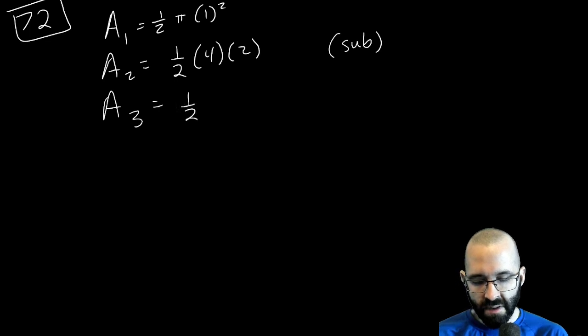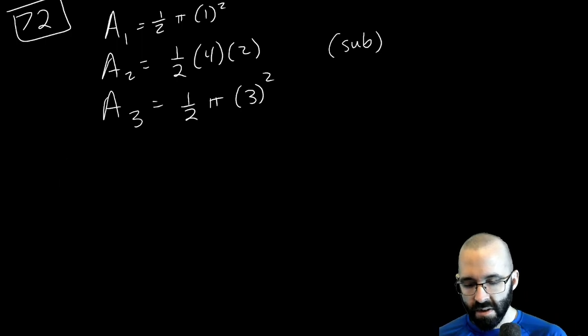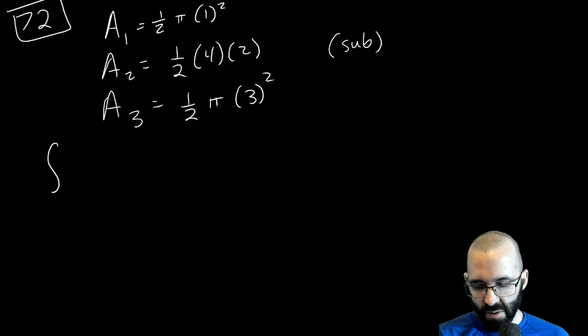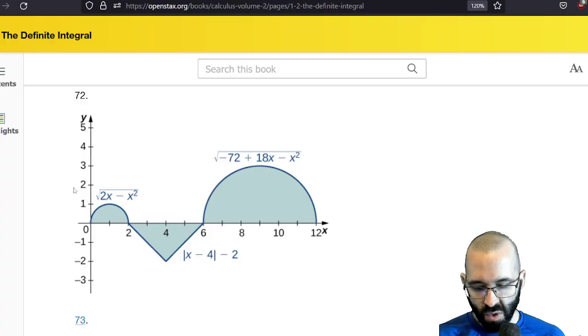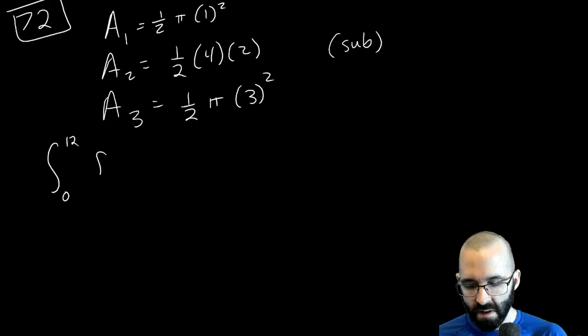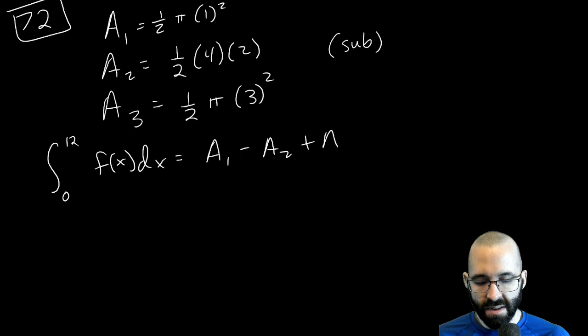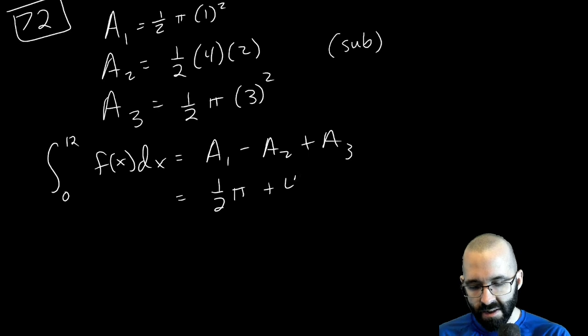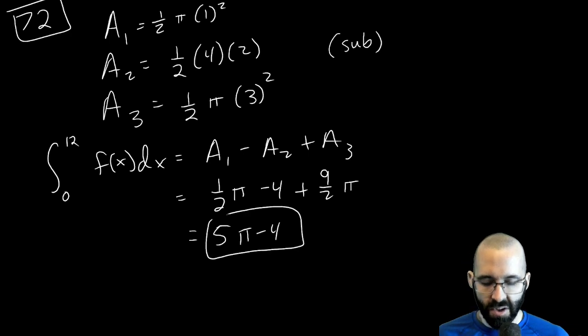So 1/2 π times the radius squared. And so our integral of whatever function this is, from 0 to 12, is just going to be the first area minus the second area plus the third area. So 1/2 π minus 4 plus 9/2 π. We'll get 10 halves or 5π minus 4.